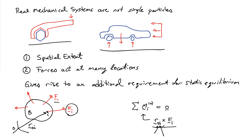The cross product of R_OI with the force gives the moment. The reference point is arbitrary, as we'll see shortly. The total sum is called the resultant moment, denoted M with subscript R and the reference point used to compute it. For static equilibrium, the additional requirement is that the resultant moment equals zero.